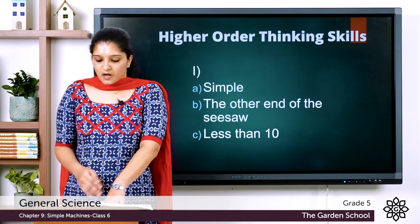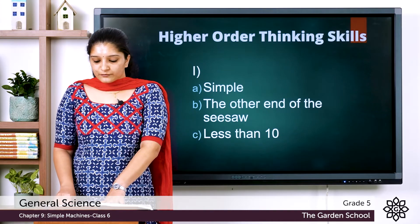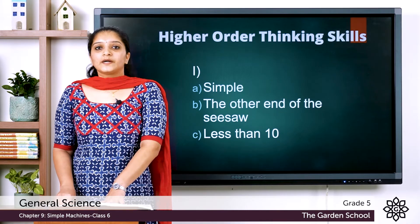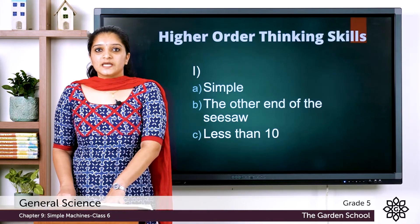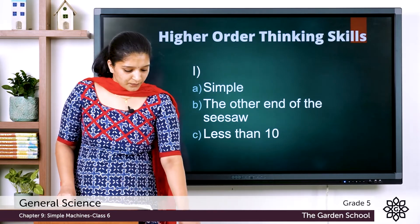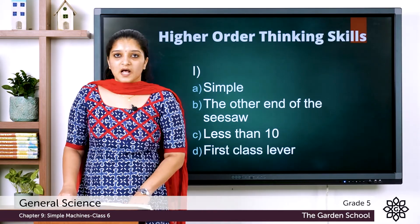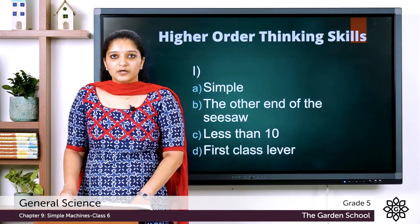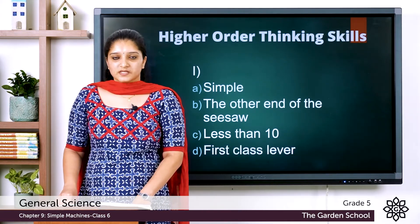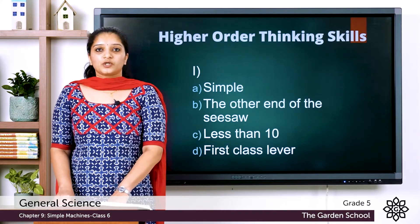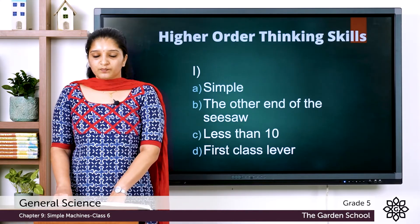The next question is: what type of lever is it — that is, what type of lever is a seesaw? The answer is a first class lever. A seesaw is an example of a first class lever. That was all about the first question.